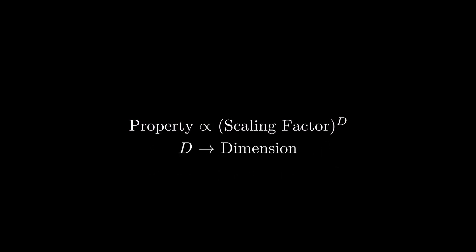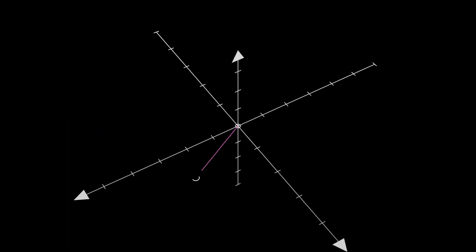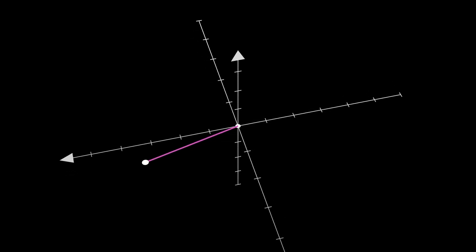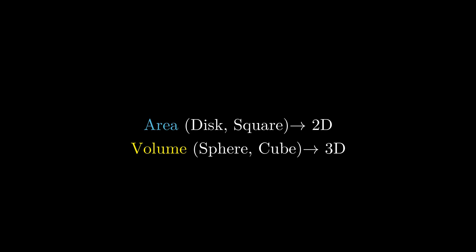This exponent decides the dimension of the properties we associated with our Euclidean shapes. So a line or the perimeter of a square or a disk are all one-dimensional objects — the set of points constituting these lines or perimeters is a one-dimensional set. We may put this line in a 3D space and it would still be a one-dimensional object embedded in three-dimensional space. Similarly, the area of a square or a disk and even the surface area of a sphere are all two-dimensional. Volumes of cubes and spheres can be demonstrated as three-dimensional.